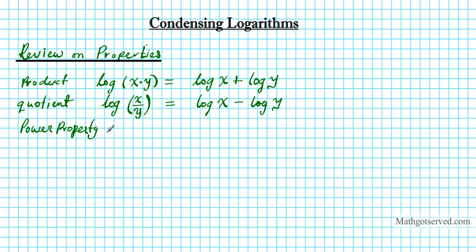So if you have n times log of x, it's the same thing as log of x raised to the nth power. Basically, if the log has a coefficient, it can be powered up into an exponent. And if you have a power for your logarithmic argument, you can bring it down into a coefficient — it goes both directions.